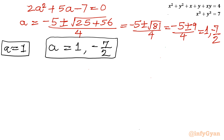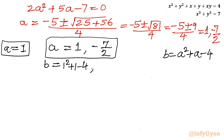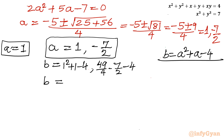Now calculating b using b = a² + a − 4. For a = 1: b = 1 + 1 − 4 = −2. For a = −7/2: b = (49/4) − (7/2) − 4 = 19/4. So we have two sets: (a = 1, b = −2) and (a = −7/2, b = 19/4).